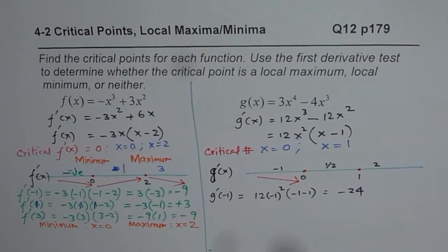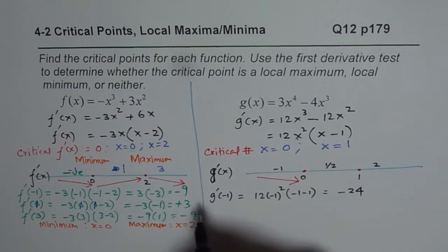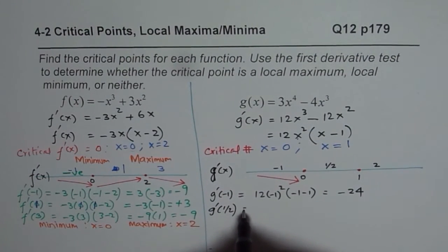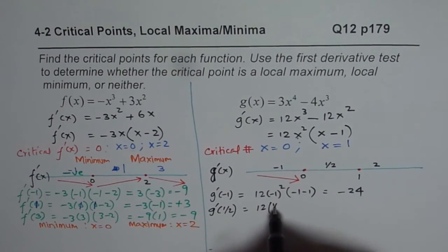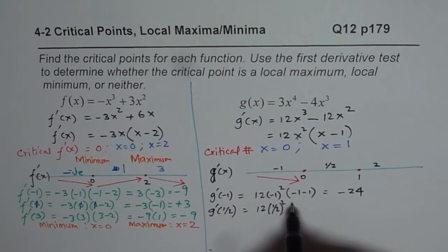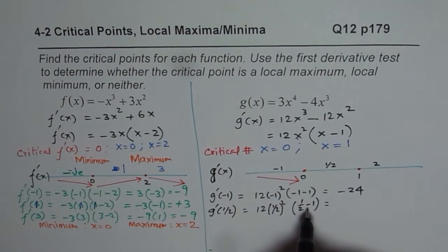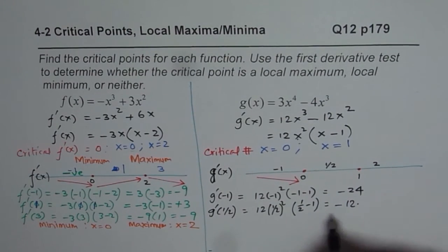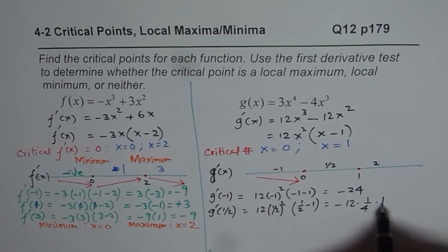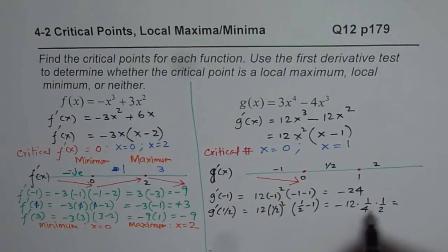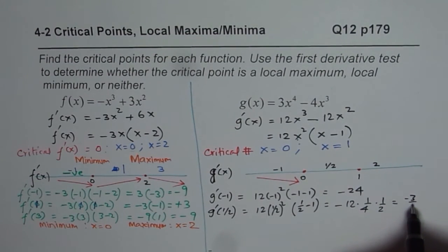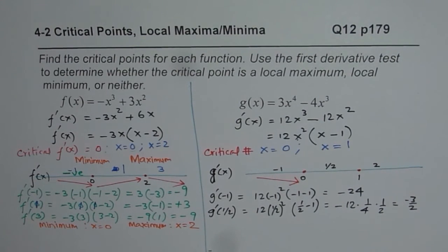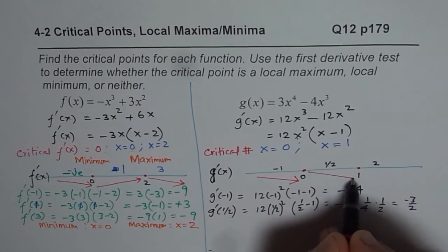A negative derivative means the function is decreasing. Substituting one-half: we get 12 times (one-half) squared times (one-half minus 1). The squared term is always positive, but (one-half minus 1) is negative one-half, so the result is negative. The function is also decreasing in the interval between 0 and 1.